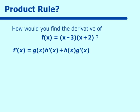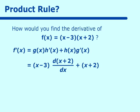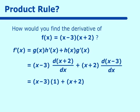Putting our functions in: g of x is x minus 3, and we take the derivative of x plus 2 with respect to x, then add h of x which is x plus 2, times the derivative of x minus 3. The derivative of x plus 2 is 1 and the derivative of x minus 3 is also 1. Cleaning this up gives 2x minus 1, and so we have used product rule to differentiate the product of two functions.